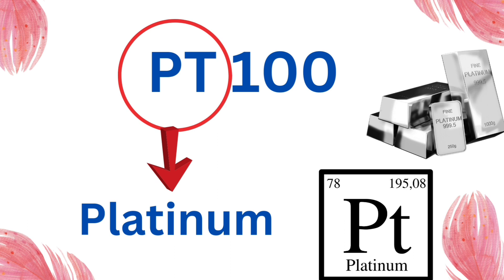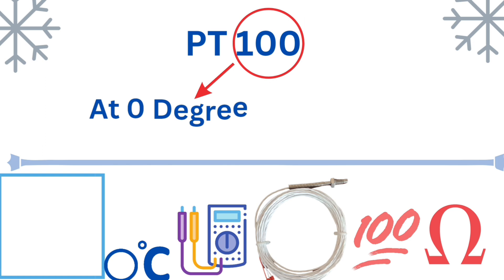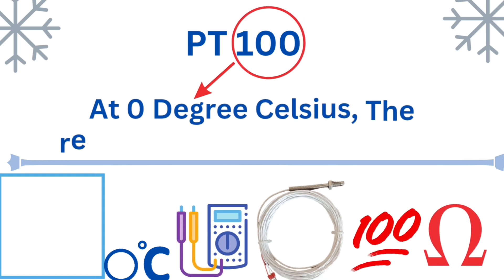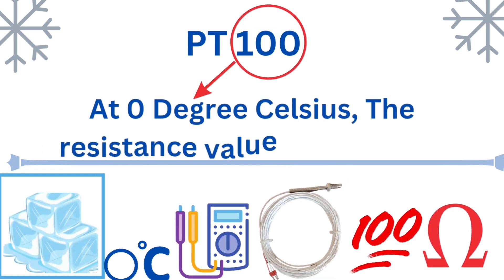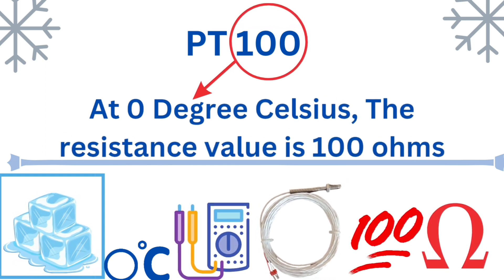In PT100, PT stands for platinum. The 100 stands for the resistance value at 0 degrees Celsius, which is 100 ohms.